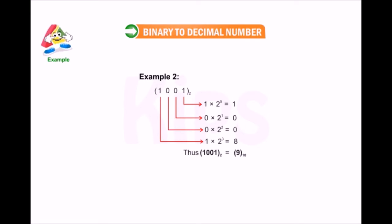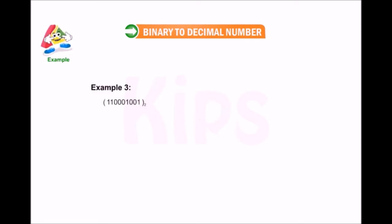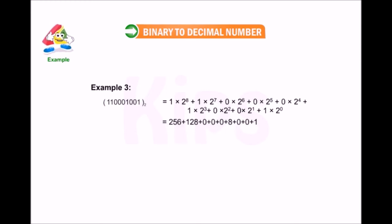Example 3: Convert 110000001 in binary to decimal. 1 × 2^8 + 1 × 2^7 + 0 × 2^6 + 0 × 2^5 + 0 × 2^4 + 1 × 2^3 + 0 × 2^2 + 0 × 2^1 + 1 × 2^0, which is equal to 256 + 128 + 0 + 0 + 0 + 8 + 0 + 0 + 1.